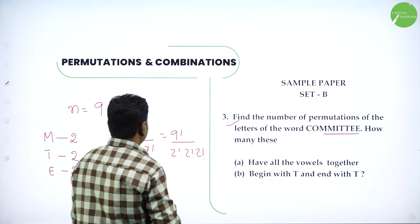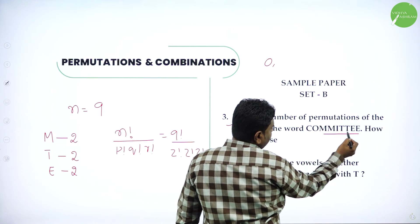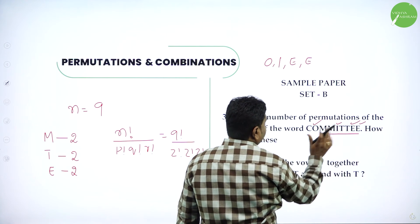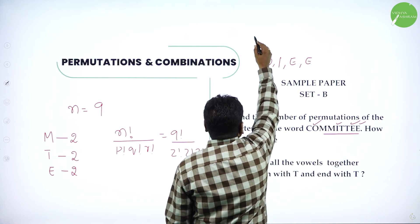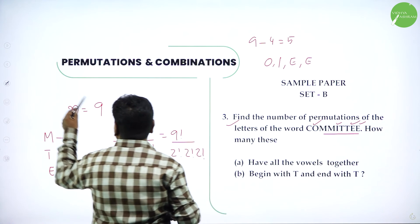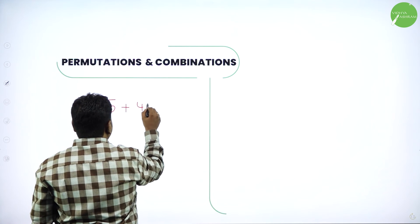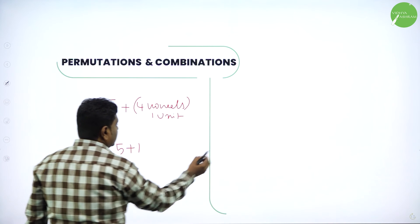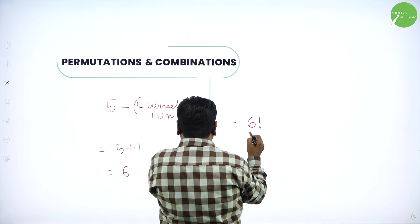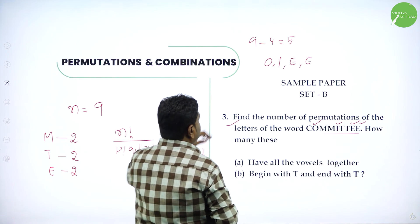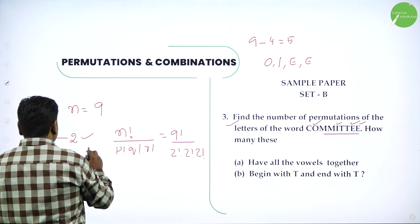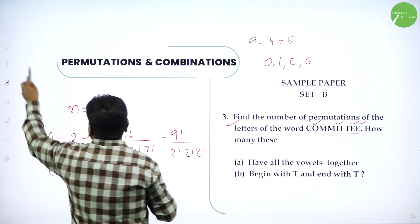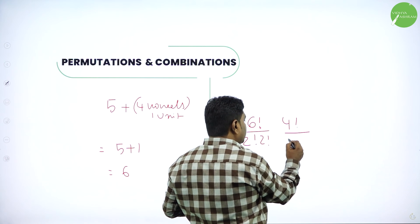For vowels together: the vowels in committee are O, E, E — that is 4 vowels total. Remove 4 from 9 to get 5 consonants, then take 4 vowels as 1 unit, giving 6 total units. Six letters can be arranged in 6 factorial ways, divided by 2 factorial (for M) and 2 factorial (for T). The 4 vowels among themselves can be arranged in 4 factorial divided by 2 factorial (for repeated E's). This gives the final answer.